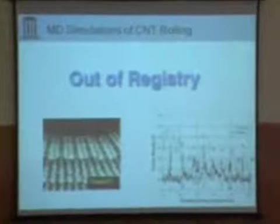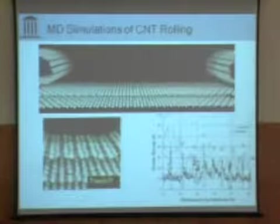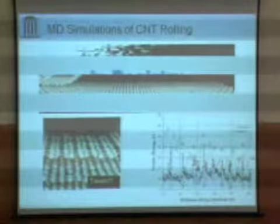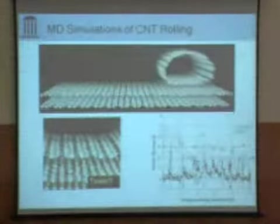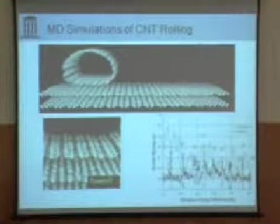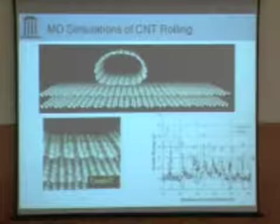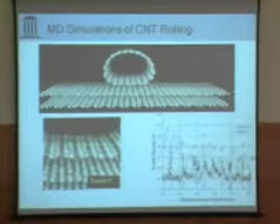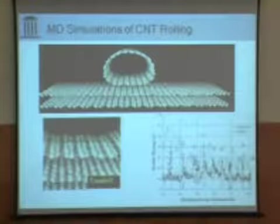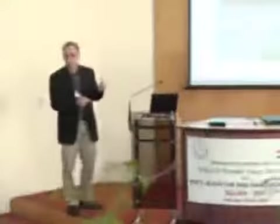Don Brenner at North Carolina State University simulated this with atomistic simulations. Here's a single-wall nanotube not in registry: give it a push, and the tube slides across the surface. When he puts them in registry, the single-wall nanotube initially slides, but then starts going through a rolling-sliding phase. This phenomenon can be captured in the atomistic simulations and reveals an interesting interplay between sliding and rolling in the energy of the system. You can almost imagine atomic scale treads or atomic scale gears where the teeth are individual atoms.